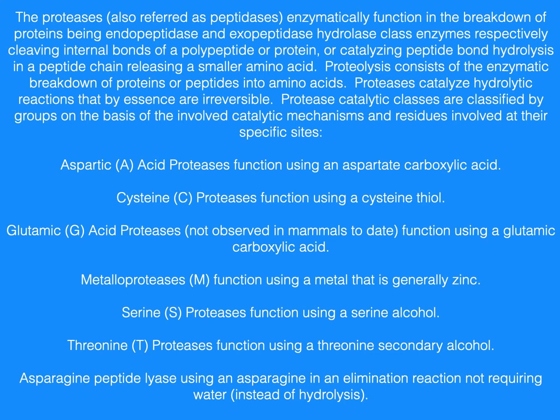Aspartic acid proteases function using an aspartate carboxylic acid. Cysteine proteases function using a cysteine thiol. Glutamic acid proteases function using a glutamic carboxylic acid. Metalloproteases function using a metal that is generally zinc. Serine proteases function using a serine alcohol. Threonine proteases function using a threonine secondary alcohol. Asparagine peptidylase uses an asparagine in an elimination reaction not requiring water.